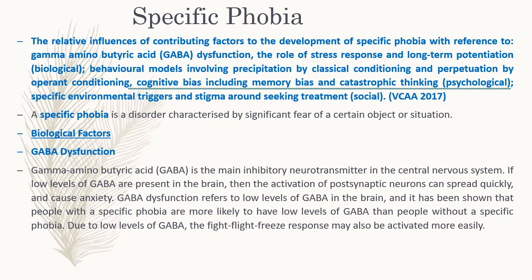When they ask for the type of phobia, they're not asking you to give the exact Latin name for it. They're actually asking you to say the words 'specific phobia.' In VCE Psychology according to the VCAA study design we're only looking at specific phobias. You'll never have to mention arachnophobia or a fear of heights specifically. But you do need to say if they ask what is the type of phobia — you say specific phobia, and it is characterized by significant fear of a certain object or situation that interferes with daily functioning.